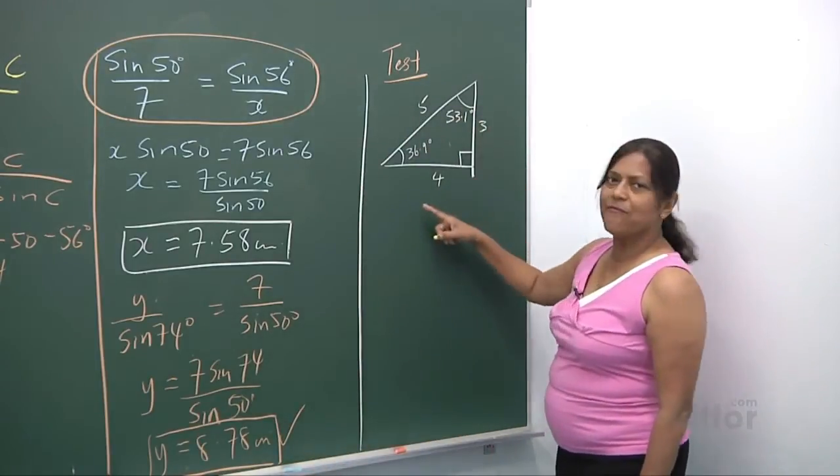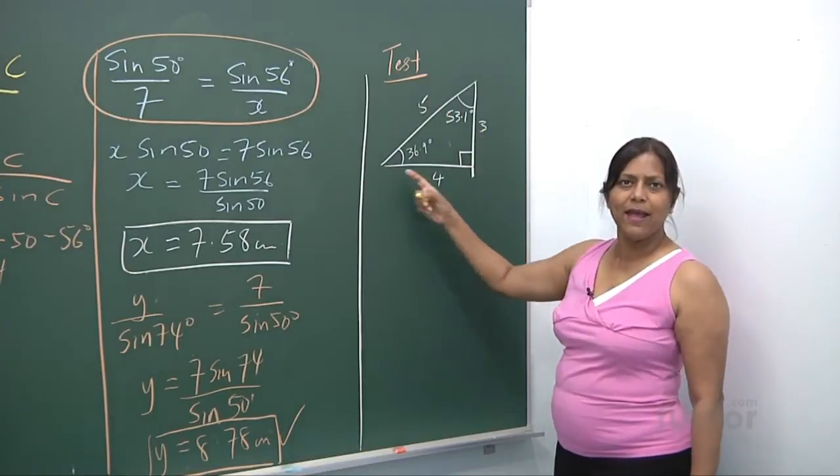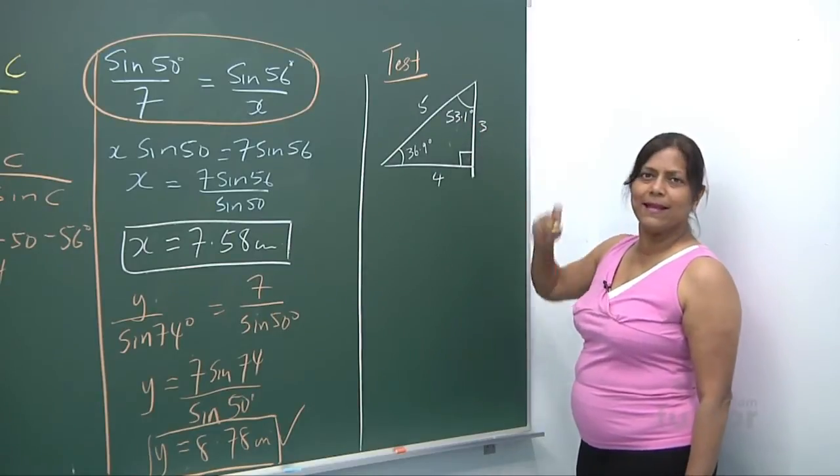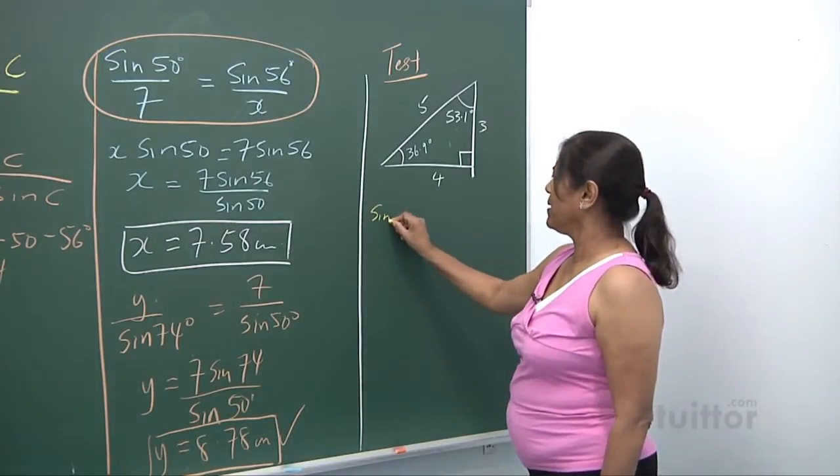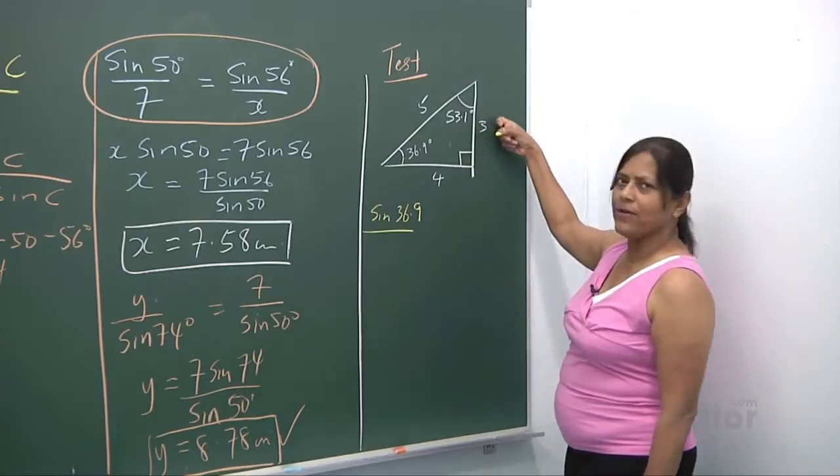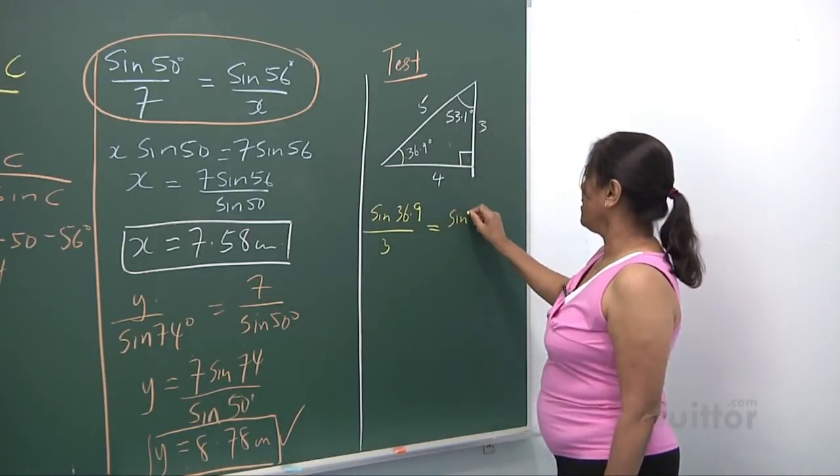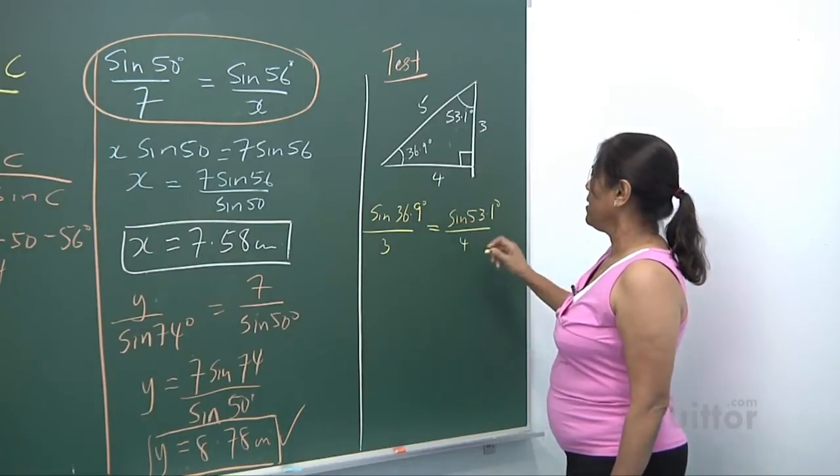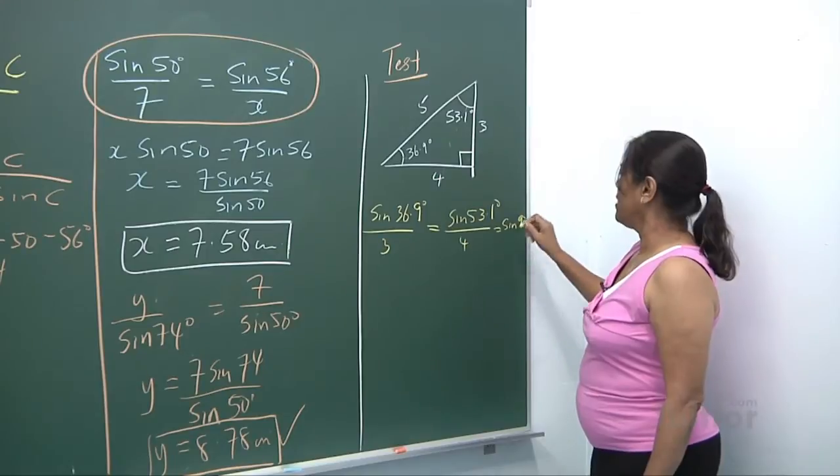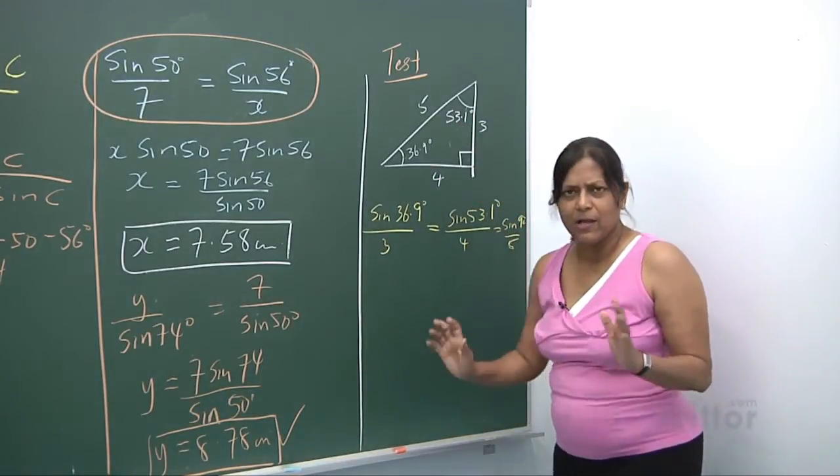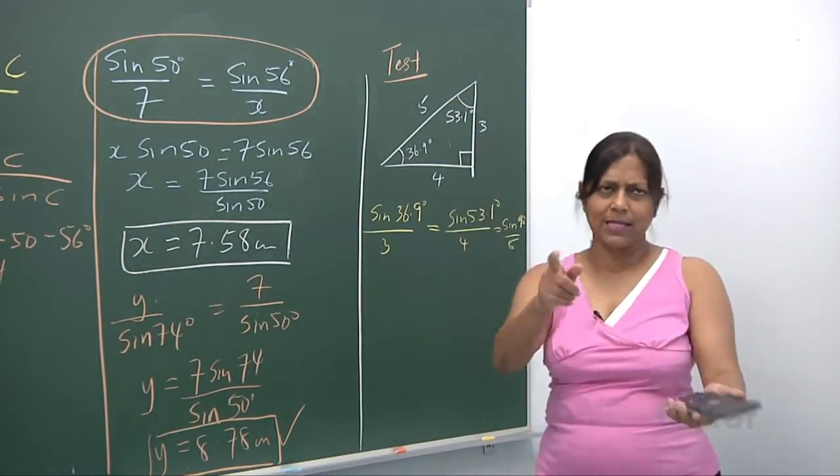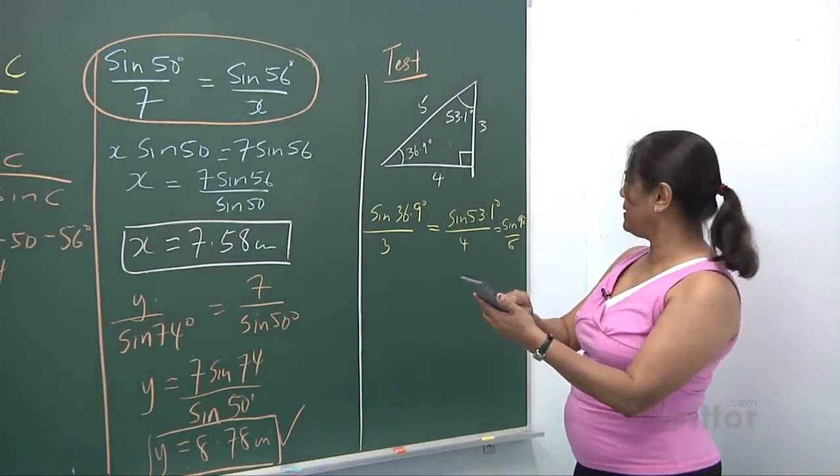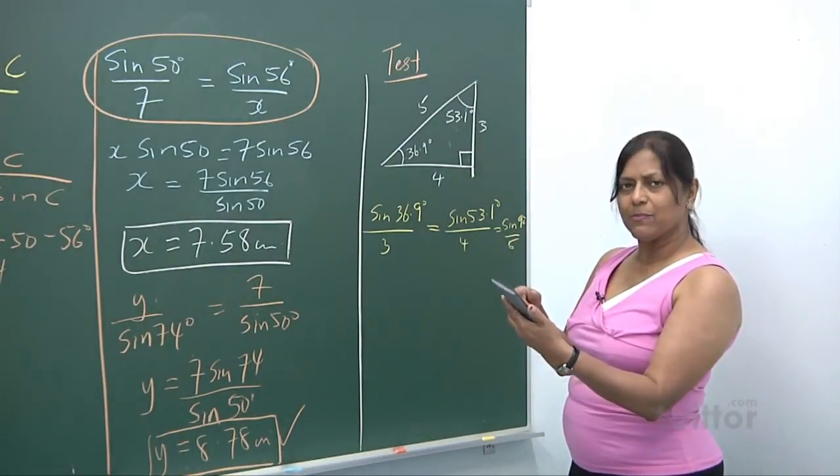You just learned the sine rule and I want you to know it's right. Let's do a test. You're given this information: 3-4-5, it's a right angle triangle. We have 53 degrees, this is 36.9, this is 53.1 degrees. We said sin 36.9 over 3 equals sin 53.1 over 4 equals sin 90 degrees over 5. Please press your calculator - is the answer accurate? I just want you to test it. What do you get? Sin 36.9 divided by 3. Do you get the same as me, 0.200?